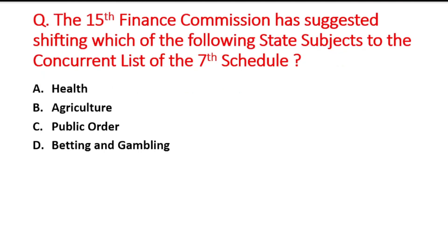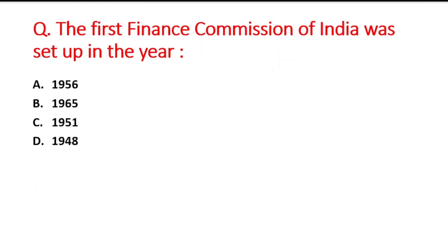Next question: The 15th Finance Commission has suggested shifting which of the following state subjects to the Concurrent List of the 7th Schedule? Option A is Health, B is Agriculture, C is Public Order, and D is Betting and Gambling. The right answer is option A, that is Health.